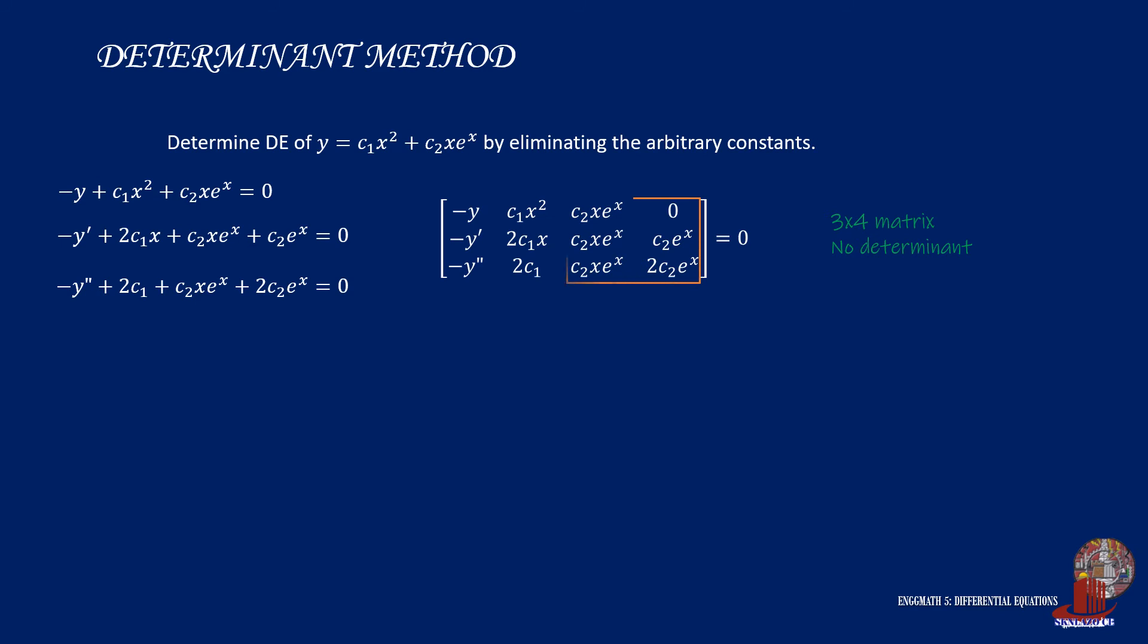Look deeper on the third and fourth columns of the matrix. C2 is common in the two, so we can combine them and the matrix will turn out as shown. Now that we are able to follow the condition for determinants, we can proceed to extracting common terms. The first column has negative 1 common, so extract it out. The second column has c1 common, and the third column has c2 times e raised to x as common, so extract it out as well.